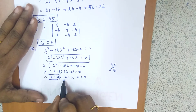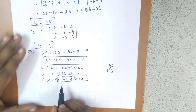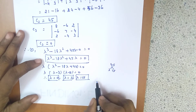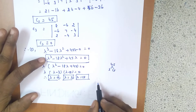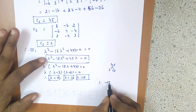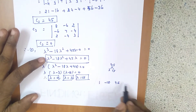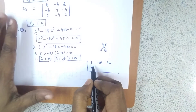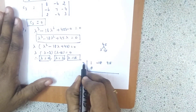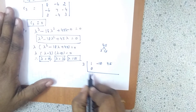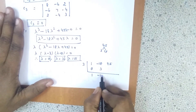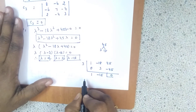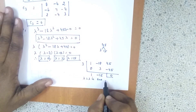There is another method — synthetic division. Write the coefficients of λ³ - 18λ² + 45λ: that is 1, -18, 45, with no constant term (so 0). Testing λ = 3: bring down 1, multiply to get 3, add to get -15, multiply to get -45, add to get 0. Since the remainder is 0, λ = 3 is a root.